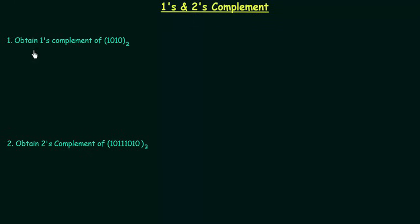In first example we have to obtain 1's complement of 1010, a binary number. We already know r-1's complement is given by r raised to power small n minus capital N minus 1, or I can write it as r raised to power small n minus 1 minus capital N.